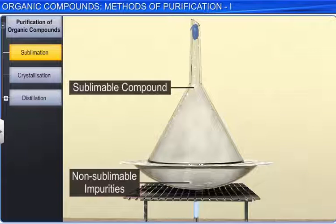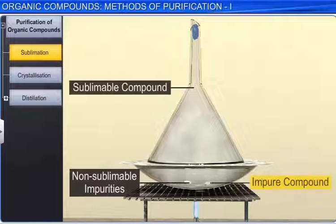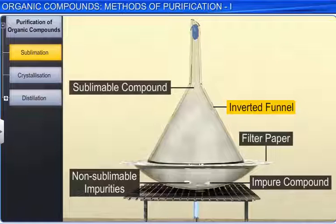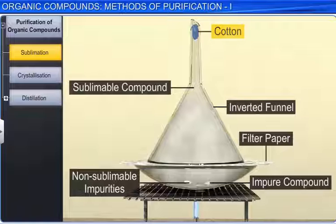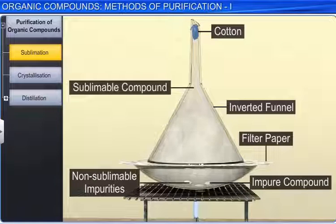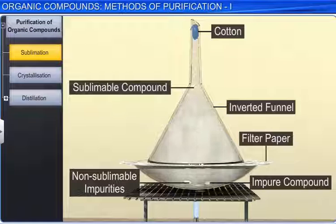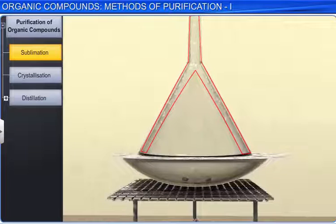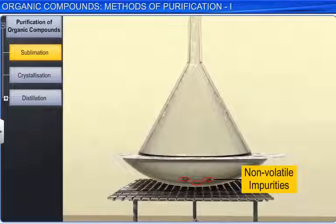In this process, the impure substance is heated in a dish covered with a perforated filter paper, over which an inverted funnel is placed. The stem of the funnel is plugged with a little cotton. Vapors of the solid which sublime pass through the holes in the filter paper and condense on the cooler walls of the funnel. The non-volatile impurities are left behind in the dish.